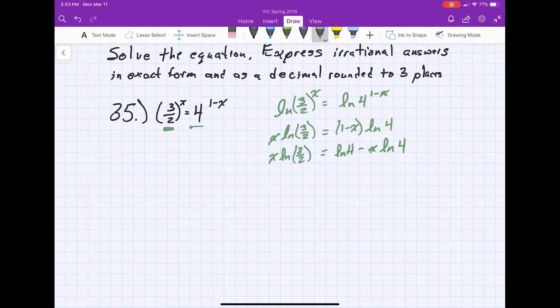What that does for us is it allows us to add x ln 4 to both sides. So we have x ln 3 over 2 plus x ln 4, leaving ln 4 all by itself on this side.